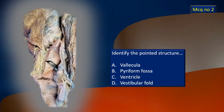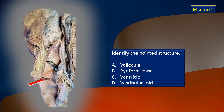MCQ number two. Again there is a red flashing arrow pointing to something. What is that item? There are four choices here also.